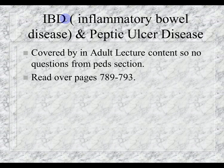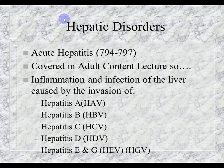Good news — inflammatory bowel disease and peptic ulcer disease are both covered in the adult content, so they will not be on the peds test. You can read pages 789 through 793 but there will be no test questions from that section. Acute hepatitis is covered on pages 794–797, also covered in adult content — no questions on my section — but just know it's an inflammation/infection of the liver caused by a virus: hepatitis A, B, C, D, E, and G.